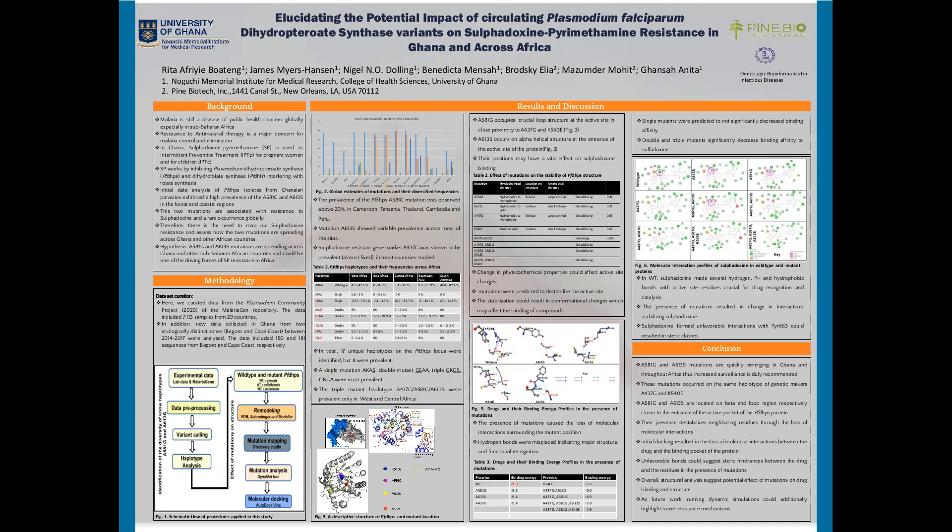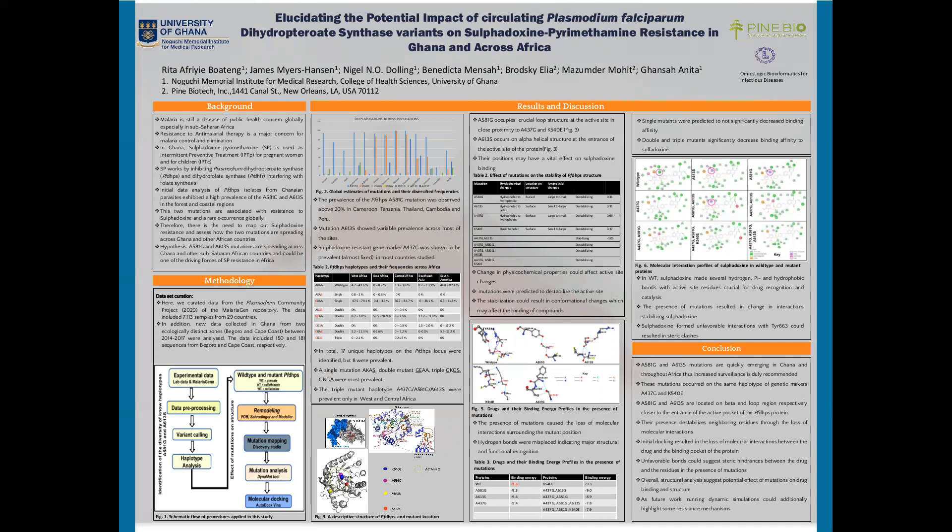For our methods, the sample size of the study was 8,044 parasite isolates extracted from 28 countries. These samples were retrieved from the Plasmodium Community Project for the MalariaGEN repository, and data collected in Ghana from two ecological zones between 2014 and 2017.